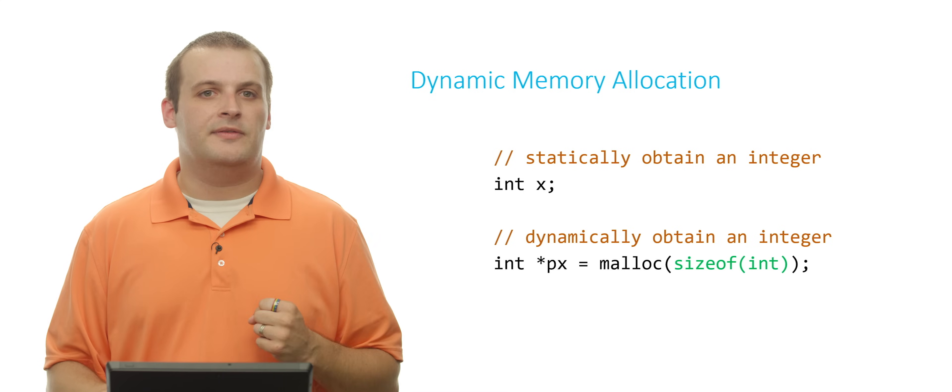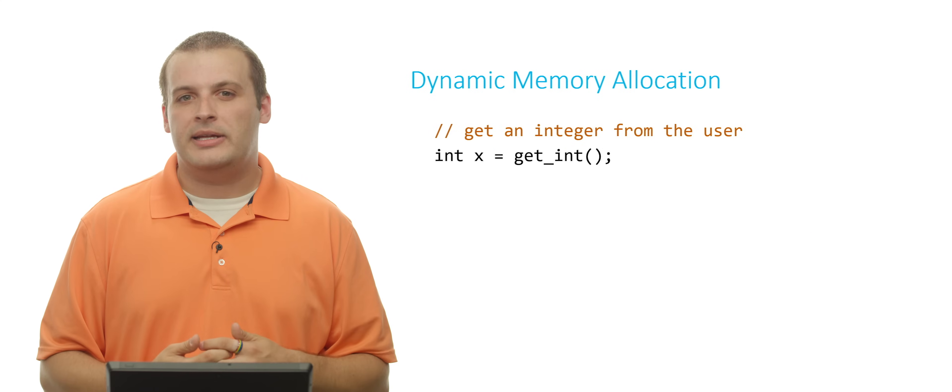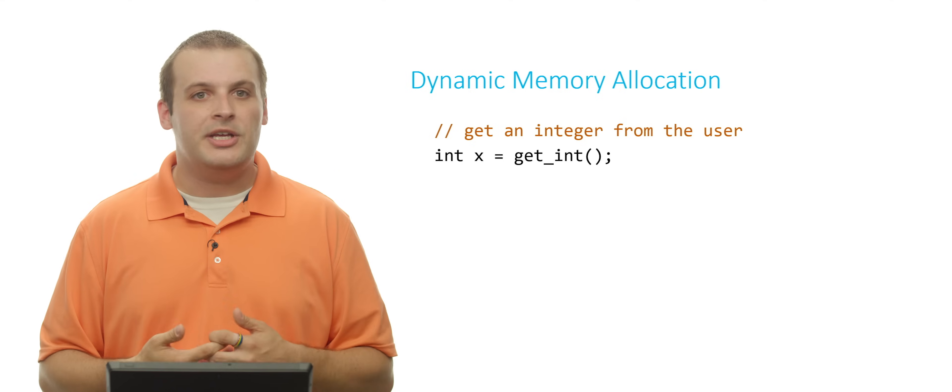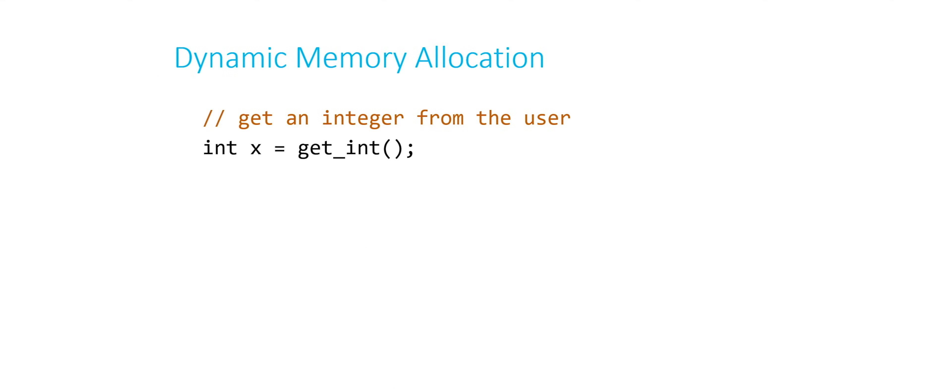Let's see another example of this. Maybe we want to get an integer from the user. So recall that in CS50, we have the getint function that we can use. Int x equals getint. We're basically prompting the user for some integer value. And it'll give us some number, hopefully, in this example, a positive number.